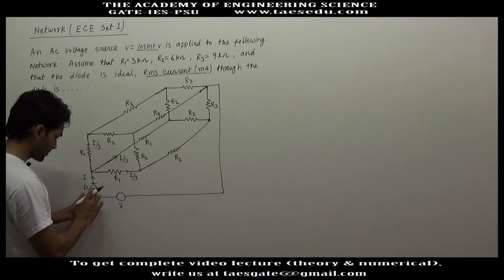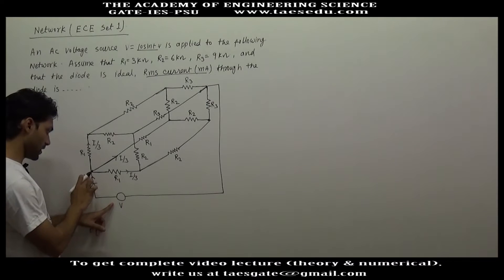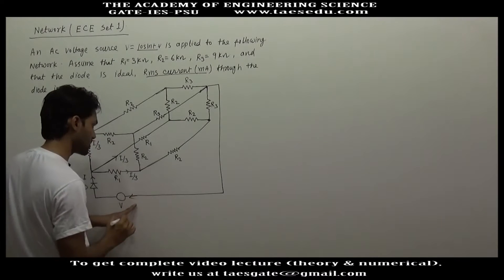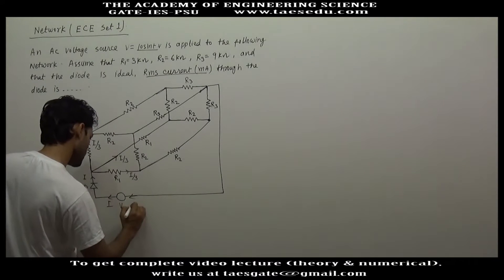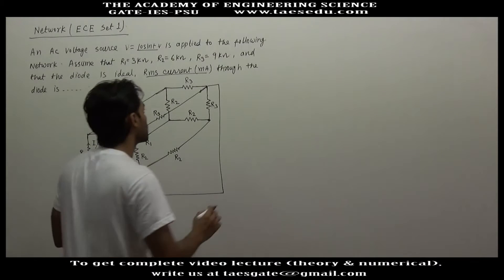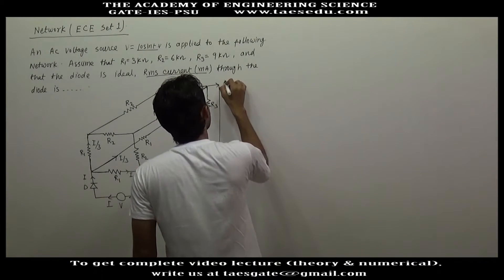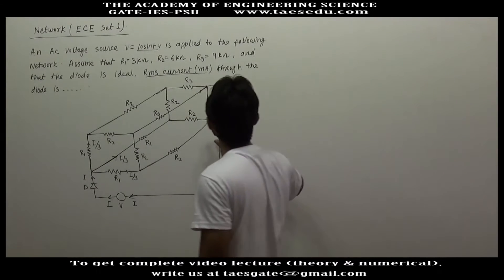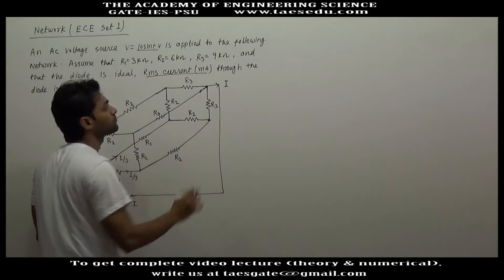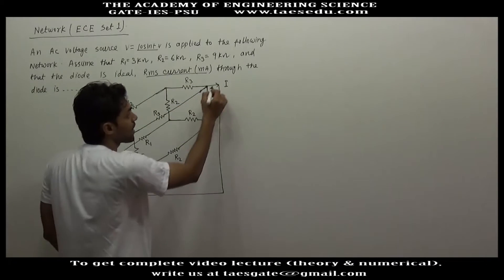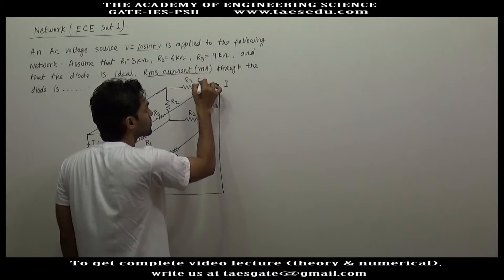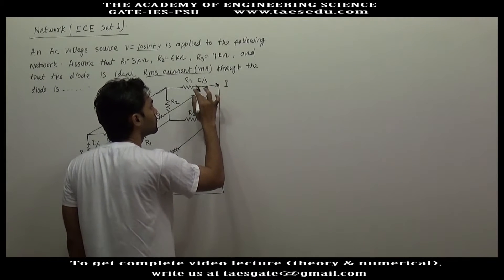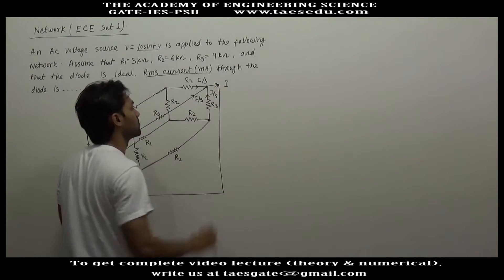Similarly, if this voltage source supplies a current I, the same current will enter the other terminal of the voltage source. So if here current is I, this current will also be I. So here also current will be I. I current will come from this resistive network and about this point also the circuit is symmetrical. So if I current is flowing here, I/3 will come from the first branch, I/3 from the second branch, and I/3 from the third branch.